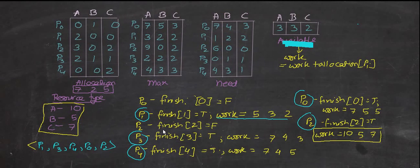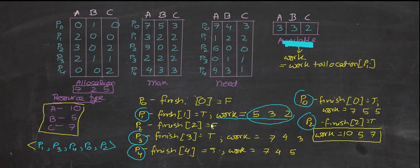After finishing P1, work equals 3,3,2 plus P1's allocation of 2,0,0, giving us 5,3,2. Next, P2 needs 6,0,0 but we only have 5,3,2 — not enough for resource A, so P2 is false. P3 needs 0,1,1 and we have 5,3,2, so it's possible. Work equals 5,3,2 plus P3's allocation of 2,1,1, giving us 7,4,3.